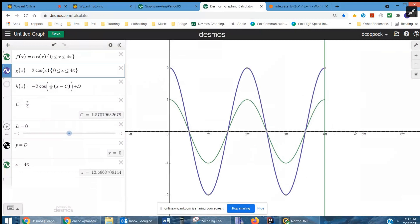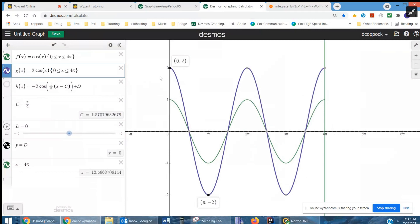Now, the midline for the standard sine and cosine function is the x-axis. So we've gone up here to 2 for the y-value and down to negative 2.